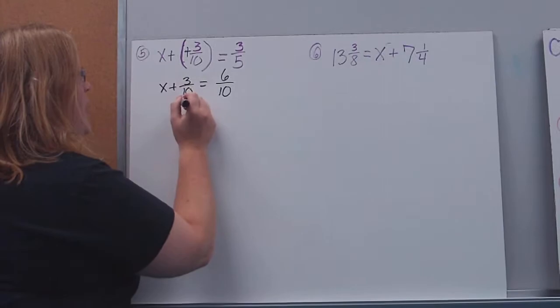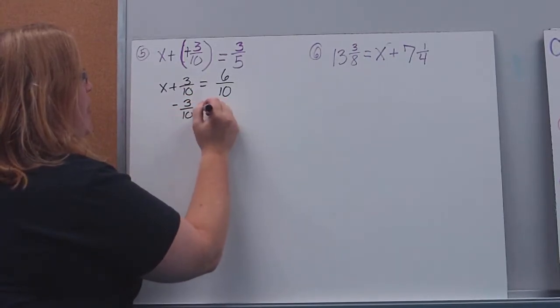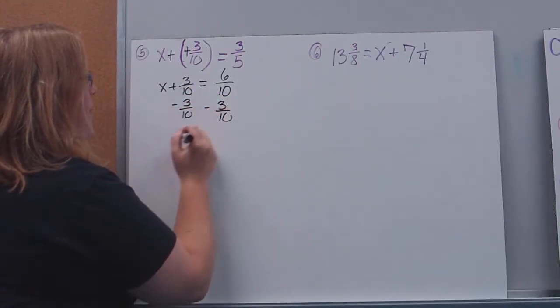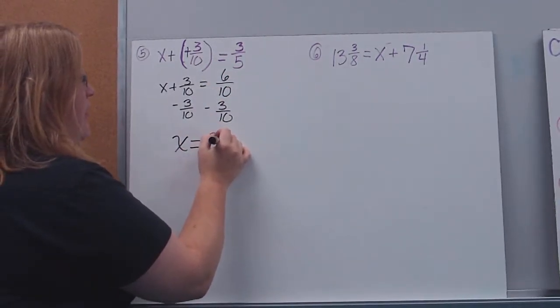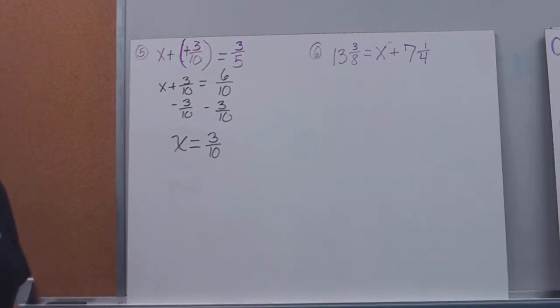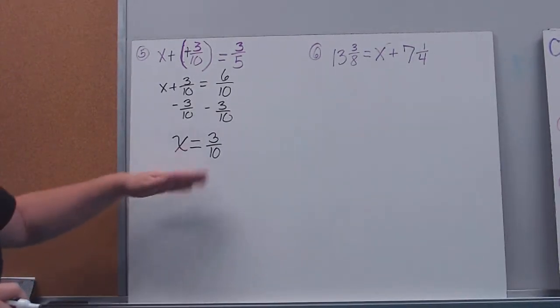So now I have an addition equation, so I'm going to undo that by subtracting. Over here I'm left with x. We've isolated it. Six-tenths minus three-tenths is three-tenths. All right? And again, we can go back. We can plug that in to make sure that we're right.